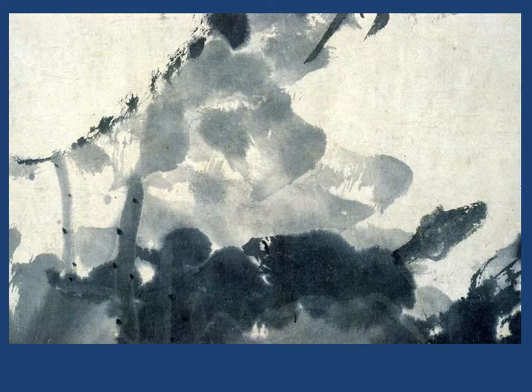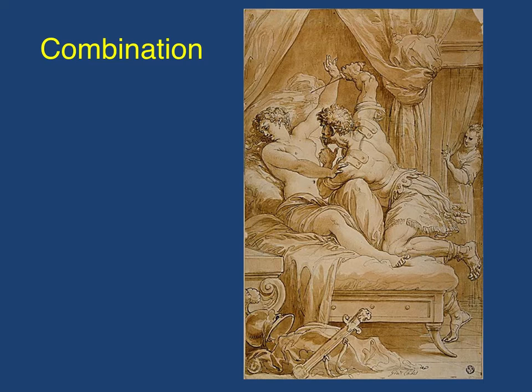Much like watercolors, with wash and brush, once you put a mark down on the surface, if you go back over it, it actually creates another tone. You can also use these mediums together. This work is a combination — the Rape of Lucretia — where you can see that we have pen, pastel, and a brown wash all used within the same work.